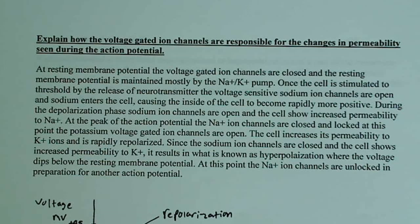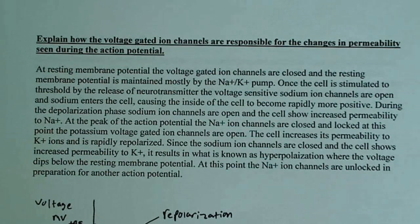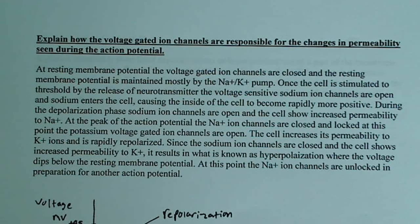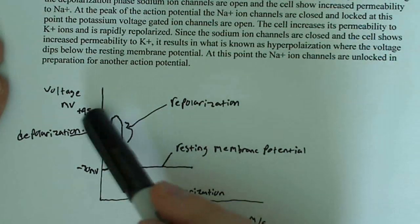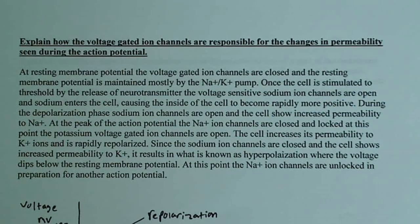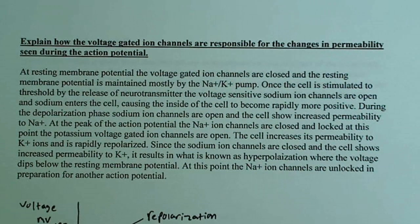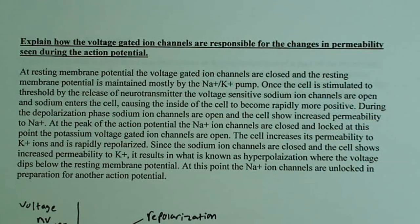Once the cell is stimulated to threshold by the release of neurotransmitters, the voltage-sensitive sodium ion channels open. Sodium enters the cell — and since sodium ions have a positive charge, this causes a rapid increase in positive charge inside the cell, going from negative 70 all the way up to plus 45 millivolts very quickly. During this depolarization phase, the sodium ion channels are open and the cell shows an increased permeability to sodium ions.